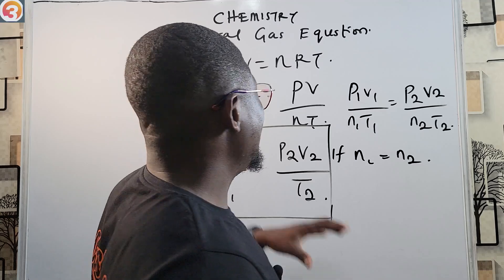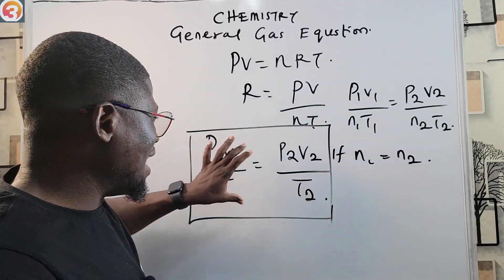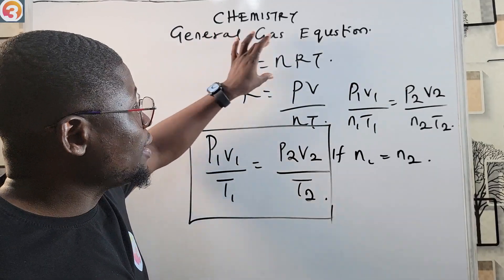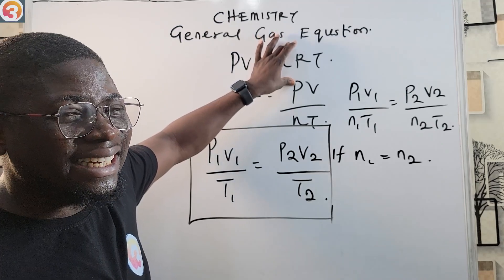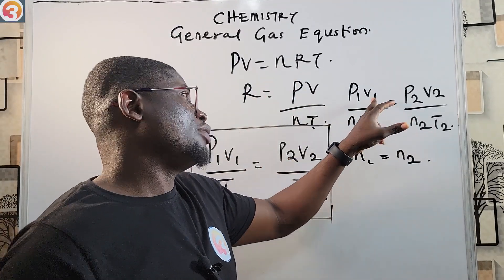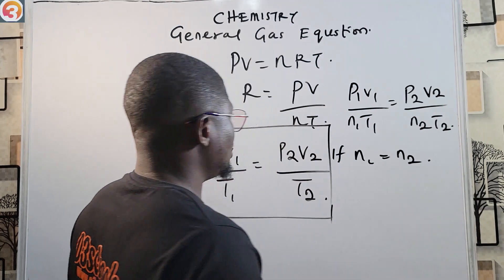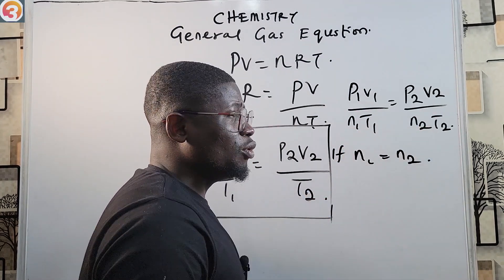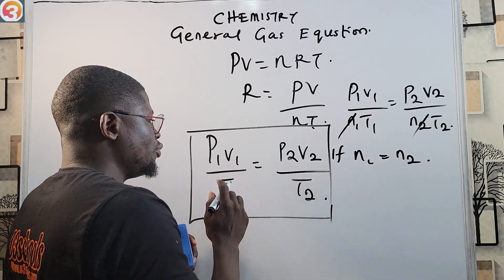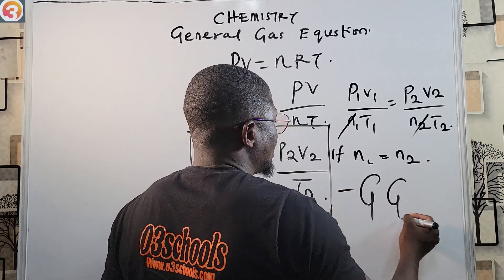This general gas equation is derived from the ideal gas equation by making the ideal gas constant R the subject of the formula. Because R is a constant, we get the new expression P1V1 over n1T1 equals P2V2 over n2T2. If the number of moles is the same — n1 equals n2 — they cancel, leaving P1V1 over T1 equals P2V2 over T2. This is the general gas equation.